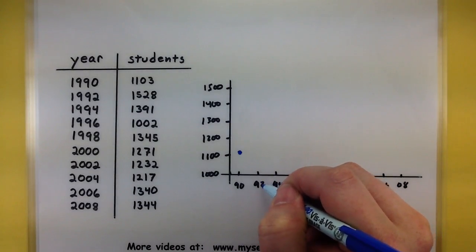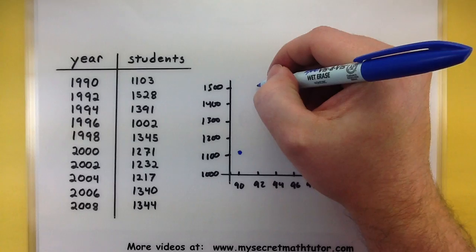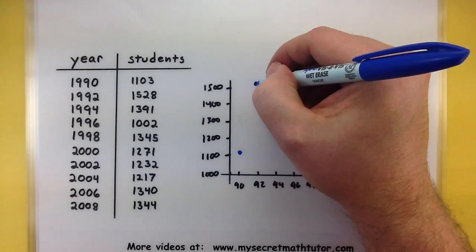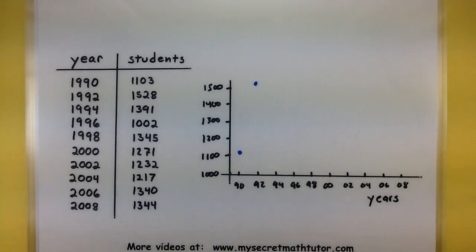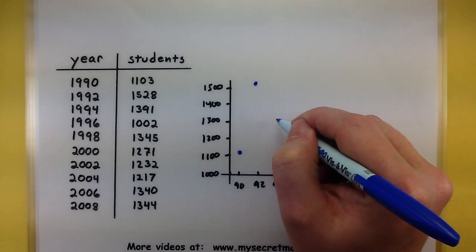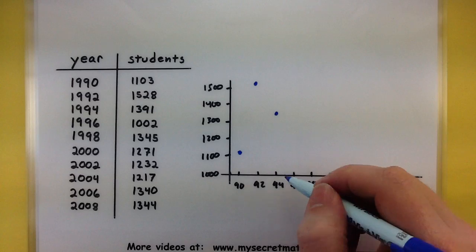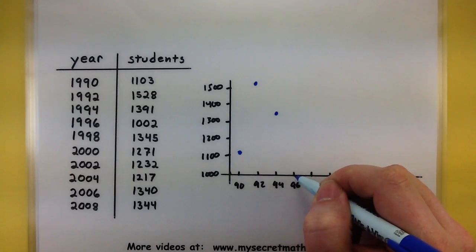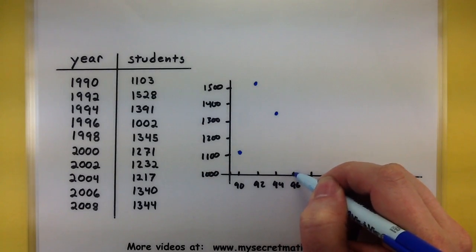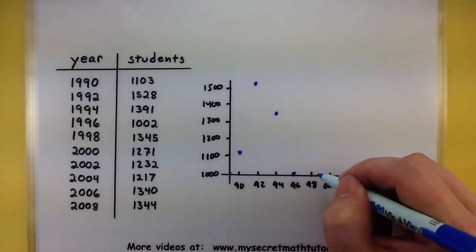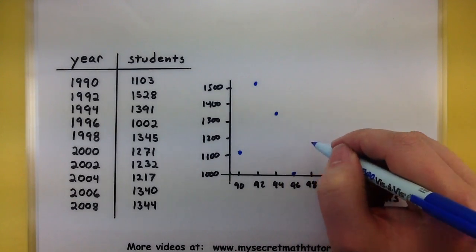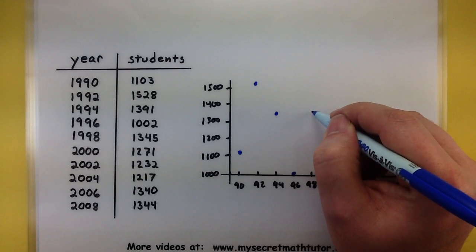For 92, it's over 1500, 1528, so just a hair over that one. For 94, 1391, we'll say it's right about there. Let's see, 96, 1002, it's just like right there, just a hair above the thousand mark. 98, 1345, let's put that one right about there.